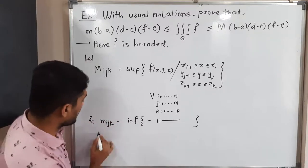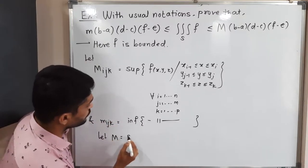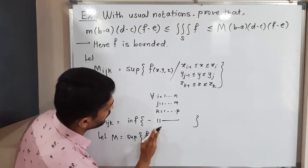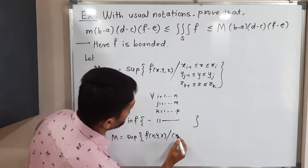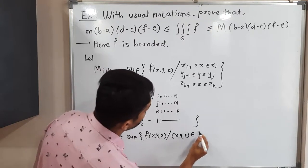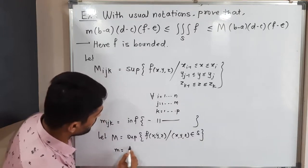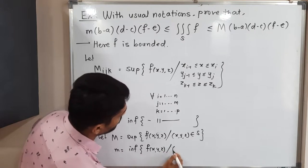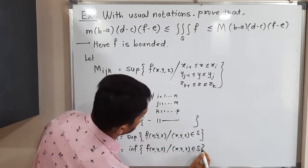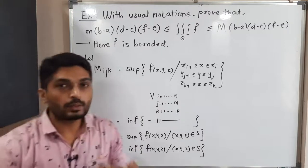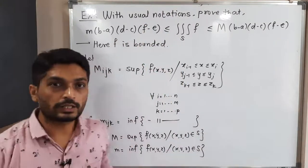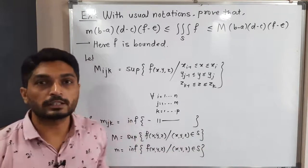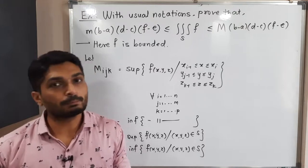Let capital M equal the supremum of f(x,y,z) where (x,y,z) belongs to S, and let small m equal the infimum of f(x,y,z) where (x,y,z) belongs to S. So capital M is the maximum value over the entire cuboid, and small m is the minimum value over the entire cuboid.